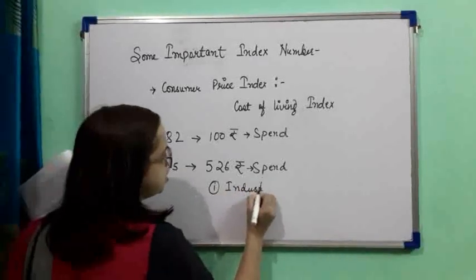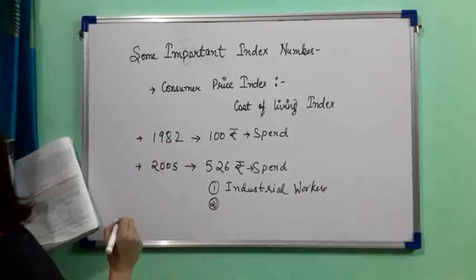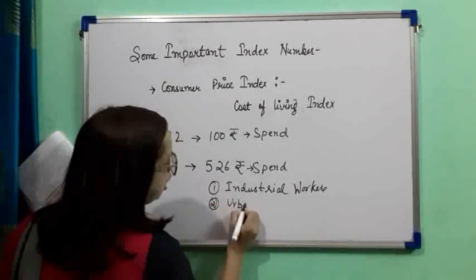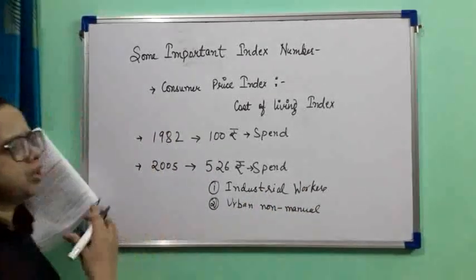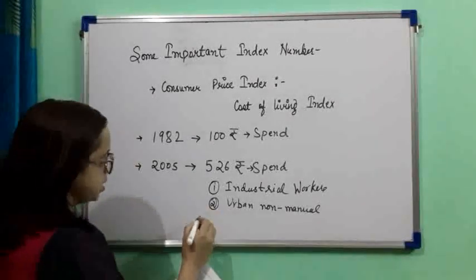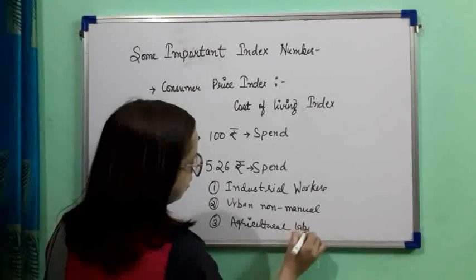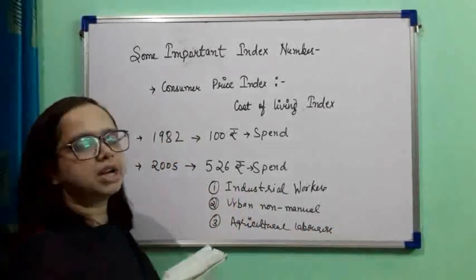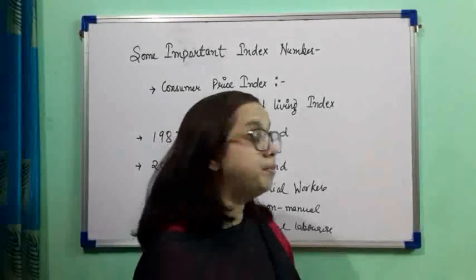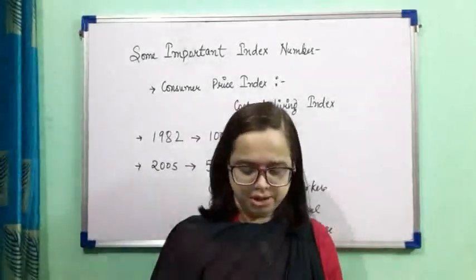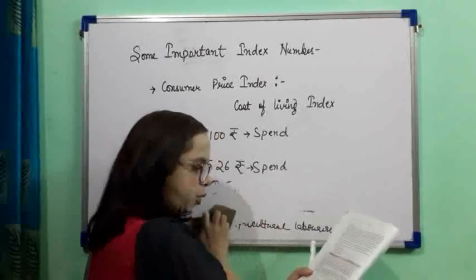The major groups of consumers for whom the Consumer Price Index numbers have been constructed in India are: first, industrial workers — those working in industries; second, urban non-manual workers — those living in urban areas but not doing manual work; and third, agricultural workers.